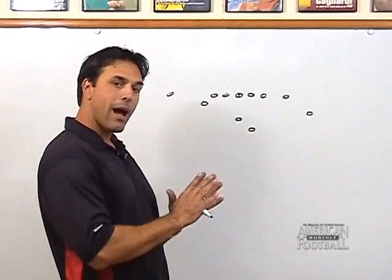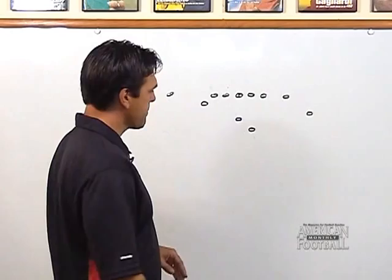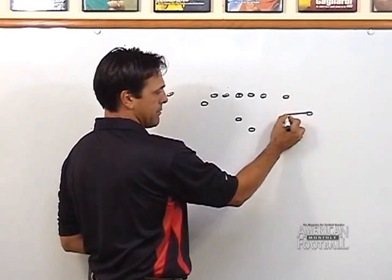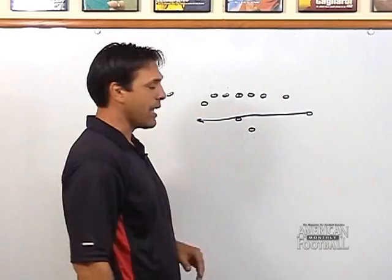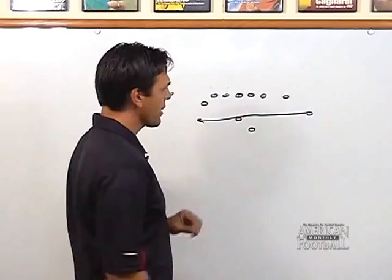We can run the waggle out of any formation, and we do. But our rules always stay the same. We are going to start with a fly sweep fake. That's going to start the play, and we are going to sell 100% that we are running sweep.